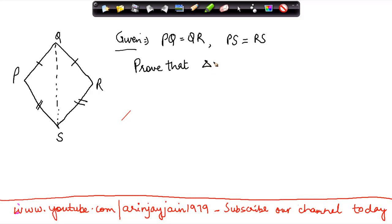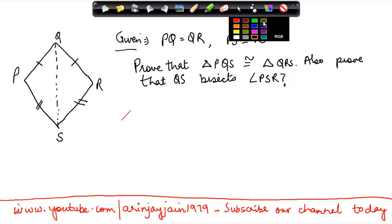Prove that triangle PQS is congruent to triangle QRS. Also prove that QS bisects angle PSR. So this is a very simple situation, let's get down to the solution.